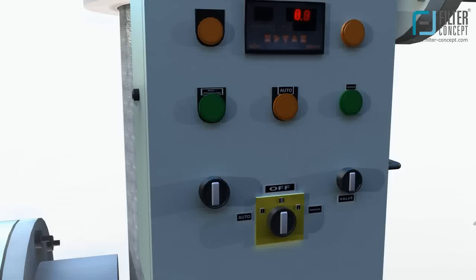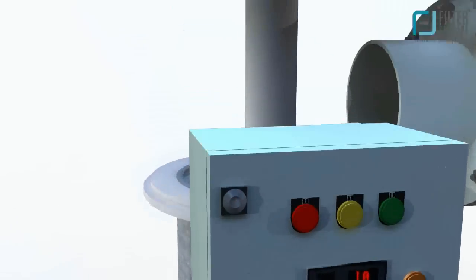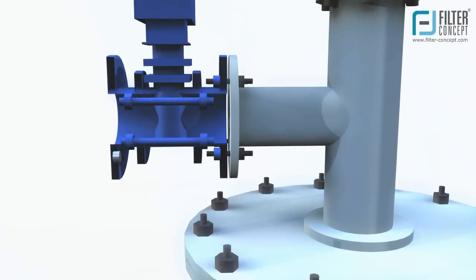Once differential pressure reaches its preset level, the control panel sends a signal to back flushing valve to open.